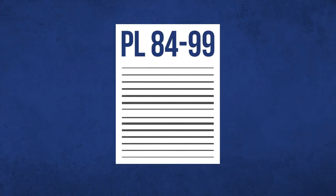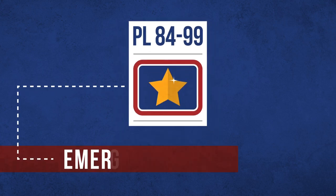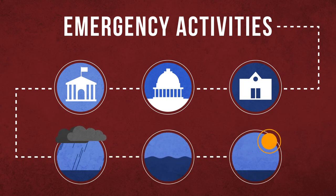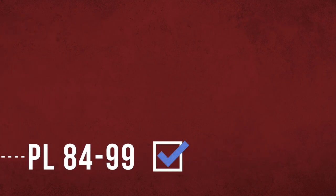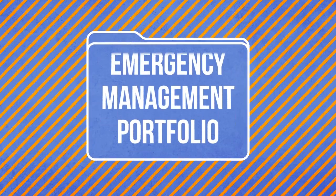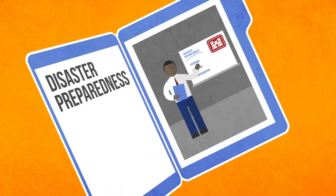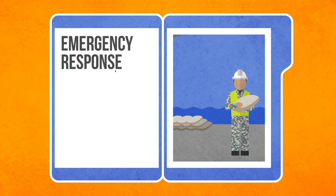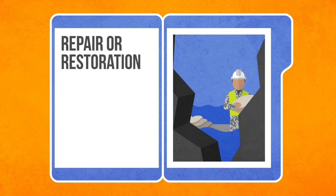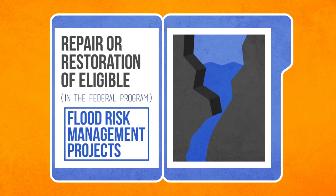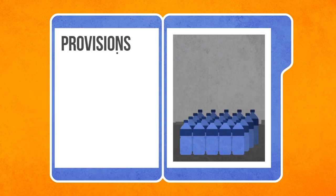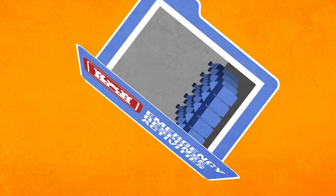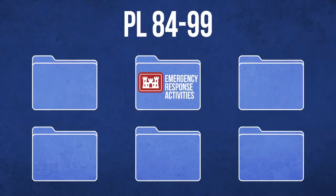Public Law 84-99 is the Corps of Engineers' basic authority to provide for emergency activities in support of tribal, state, and local governments prior to, during, and after a flood or storm-related event. PL 84-99 authorizes a diverse list of activities within the Corps' emergency management portfolio, including but not limited to disaster preparedness such as training, planning, and coordination; emergency response and flood fighting operations; the repair or restoration of eligible flood risk management projects damaged or destroyed by flood; as well as provisions for emergency water assistance, advanced measures, and hazard mitigation. The majority of routine USACE emergency response activities fall under PL 84-99.